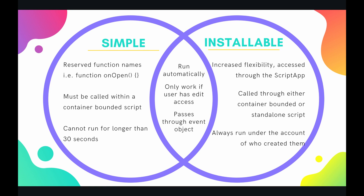Now let's look at installable triggers. With installable triggers, you have increased flexibility. They are accessed through the Script App itself, so you have a list of methods and just a little bit more wiggle room. They can be called through either a container-bounded or a standalone script — in fact, most of the time you'll call these installable triggers through a standalone script.